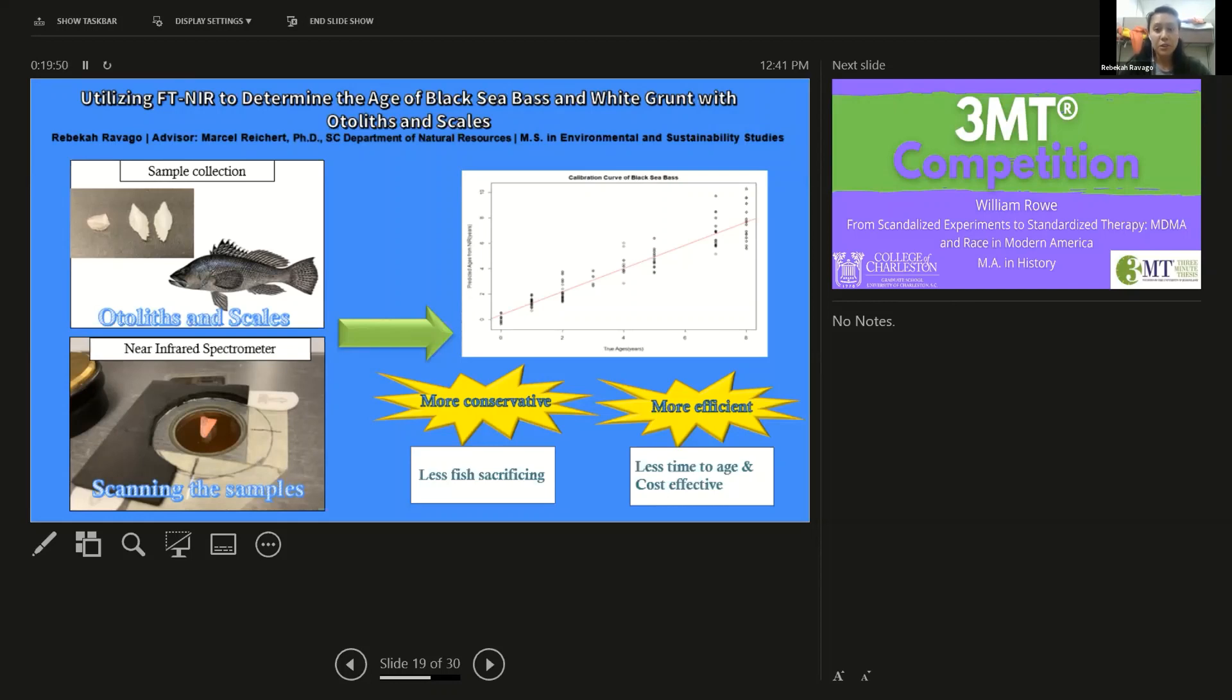Traditionally, we count the number of rings that are formed, kind of like counting the rings of a tree trunk. This age data is very crucial for fisheries scientists to evaluate the health of a fish population.